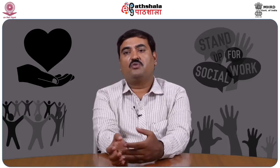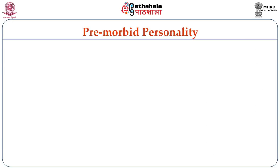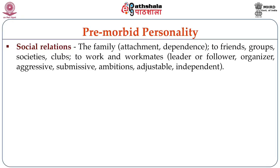The next category is substance use, where we look at whether this person has been exposed to or using or abusing alcohol, tobacco, and drugs — how long the person has been using alcohol or smoking, and whether there are any withdrawal-related symptoms. The next item is pre-morbid personality, where we look at social relationships, intellectual activities, and mood — including the person's interaction with friends, groups, and society, and whether they had many friends and how they adjusted with them.